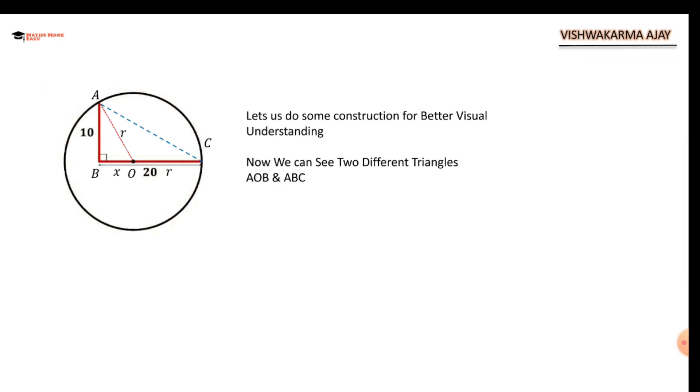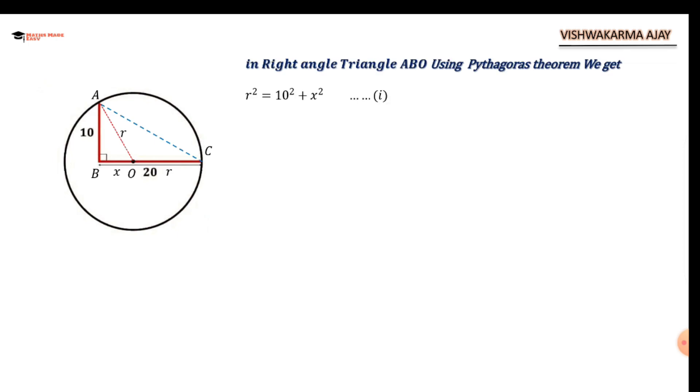After construction, we can see two different triangles: AOB and ABC. We are going to work on AOB. In right angle triangle AOB using Pythagoras theorem, we get R² = 10² + X², that is radius square equals X² + 10².